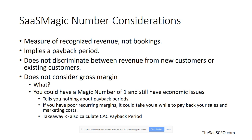Some important SAS magic number considerations: it's a measure of recognized revenue, not bookings, so don't confuse those. It also implies a payback period. So if your SAS magic number is 1, you're paying back the sales and marketing spend in 12 months.